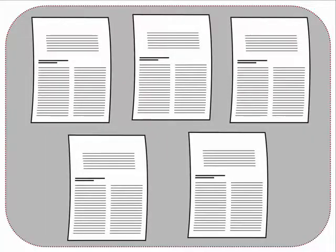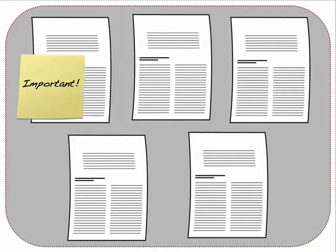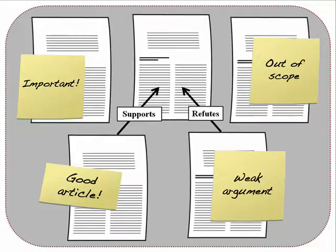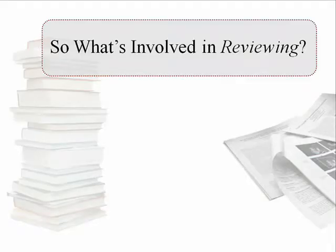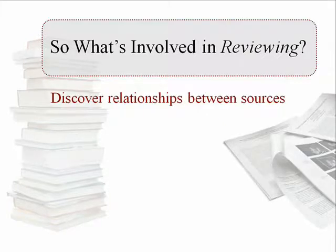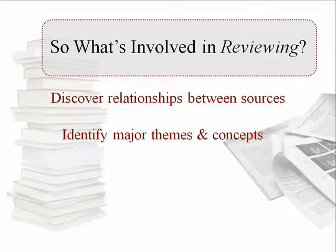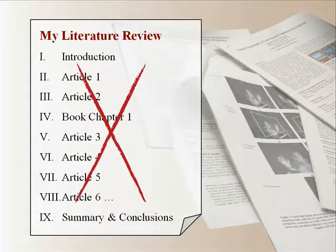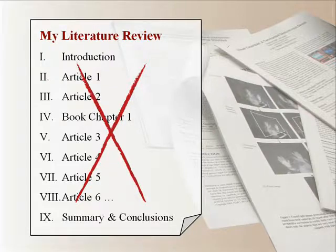When you work with the literature, you will read and critically examine articles and books to see what's important or out of scope, and analyze arguments for strengths and weaknesses. It is important to look for relationships between publications. Some of the important relationships you discover might include major themes and important concepts, as well as critical gaps and disagreements. But don't fall into the trap of making your review a laundry list of summaries — a literature review is not an annotated bibliography. Your goal should be to go one step further and integrate and synthesize what you find into something new.